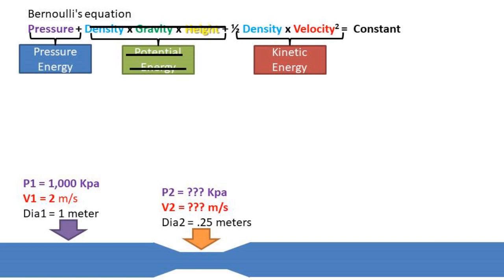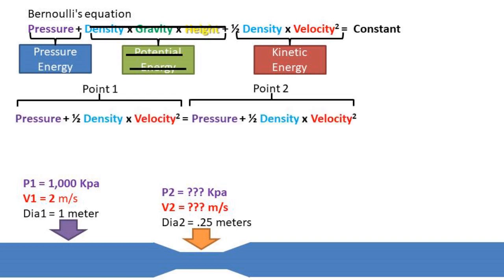Being that there is no average height difference between point 1 and point 2, we will eliminate the potential energy portion of the equation. The energy is conserved, so both point 1 and point 2 in theory have the same energy. This means that we can take the pressure energy and kinetic energy portion of the Bernoulli equation for both point 1 and point 2 and set them equal to one another.